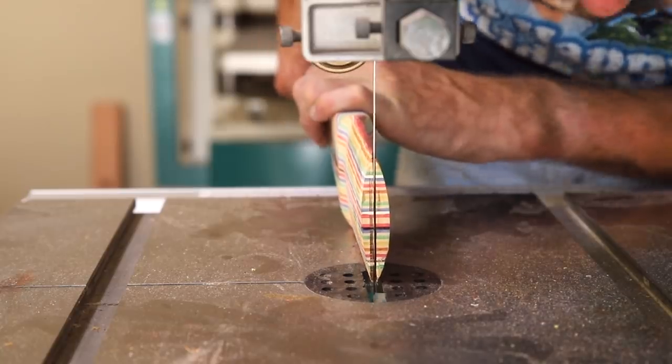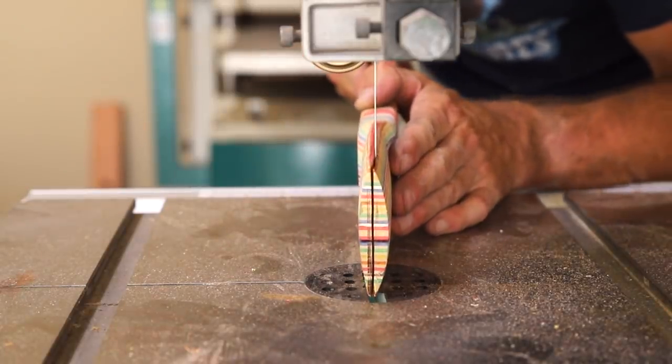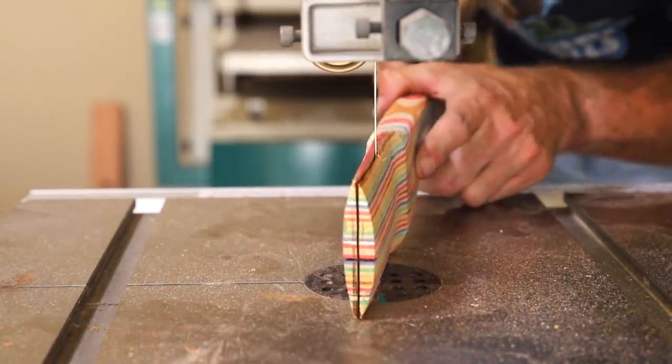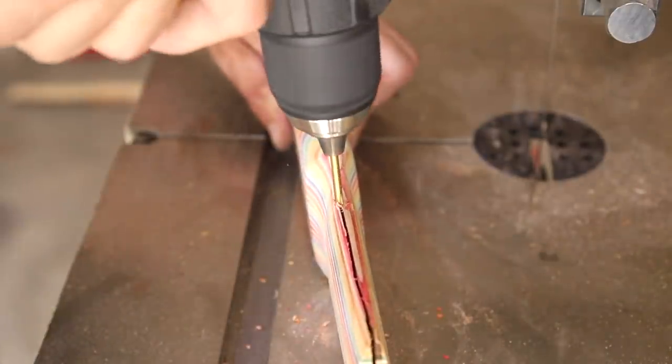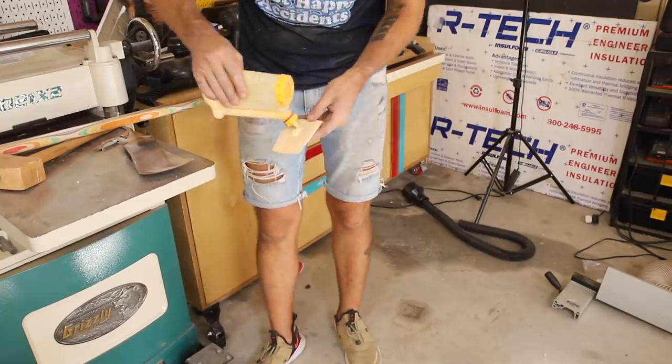I sharpened the axe head good enough where it would shave hair, but this axe is meant for zombie skulls and not shaving. This cut into the top of the handle allows me to seat the axe head and glue in a wedge which holds it in place.